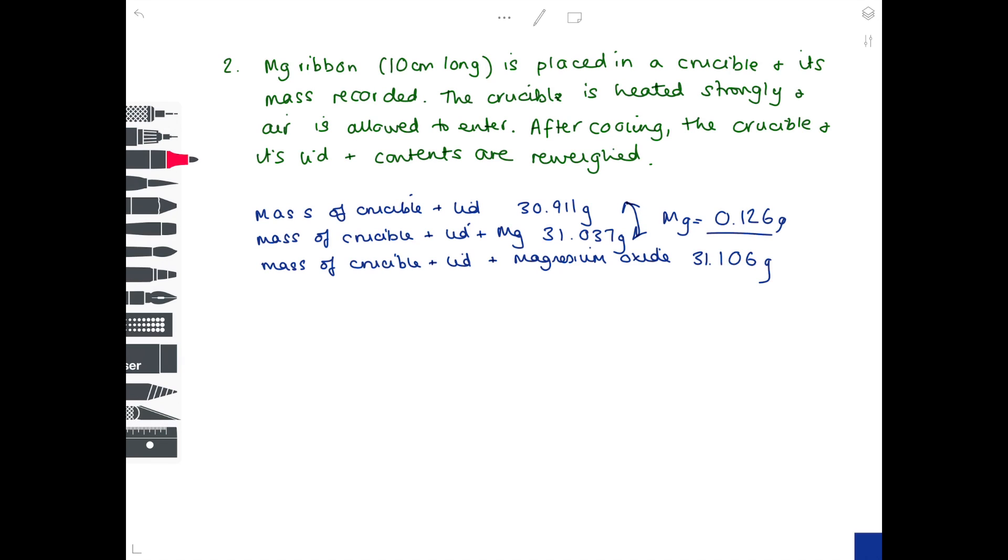Next up, we want the mass of oxygen. Let's number them 1, 2, and 3. So 2 and 3 are exactly the same, apart from we also have oxygen in number 3, which is why you just want to take 2 away from 3 in order to work out the mass of oxygen. So do 31.106 take away 31.037, and you get a mass of oxygen, which is 0.069. And now we're ready to do our empirical formula calculation.